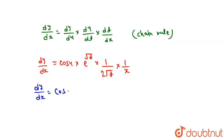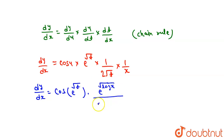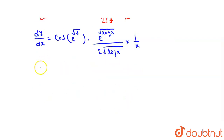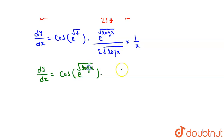We put u is equal to e to the power under root t, and we put t is equal to log x. So this gives cos of e to the power under root log x, multiplied by e to the power under root log x upon 2 under root log x, into 1 upon x. This is our final answer.